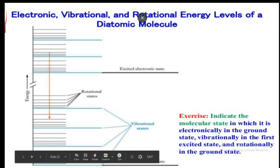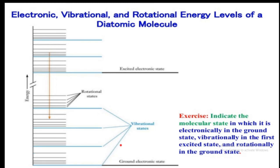These are the electronic, vibrational, and rotational energy levels of a diatomic molecule. Within each electronic state, there are a number of vibrational energy states designated by the quantum number N, with values starting from 0, i.e., N = 0, 1, 2. Within each vibrational state, there are rotational energy levels designated by the quantum number J, where J = 0, 1, 2, etc.